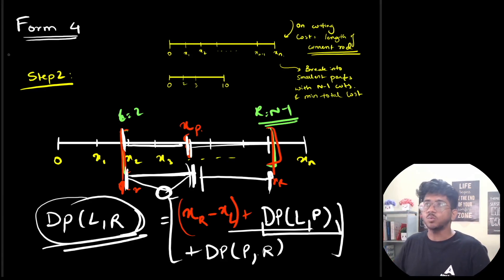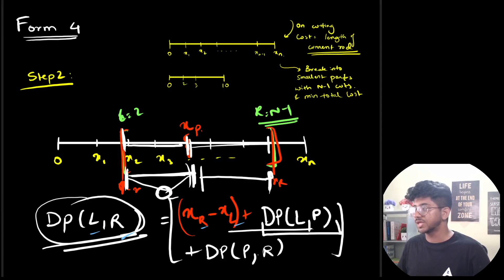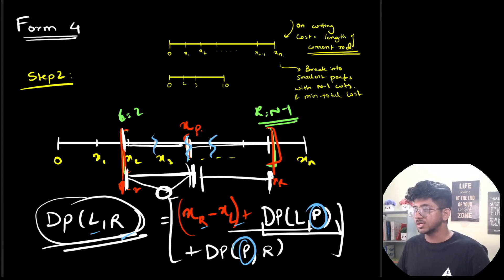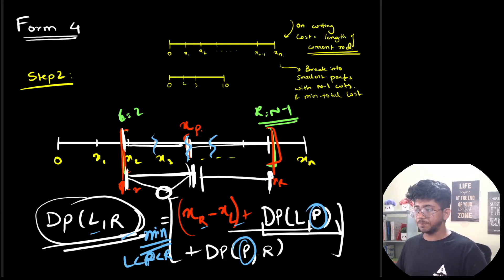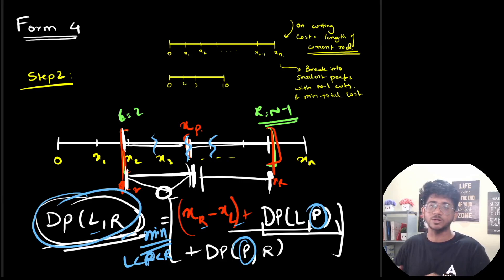L and R are fixed as the parameters of the recursion, but P is variable — we can make the first cut at any point between L and R. So we loop over all P's in the range L to R (exclusive) and minimize the total cost. Whatever best P we find such that this cost is minimum defines the best cost to break the rod from L to R.